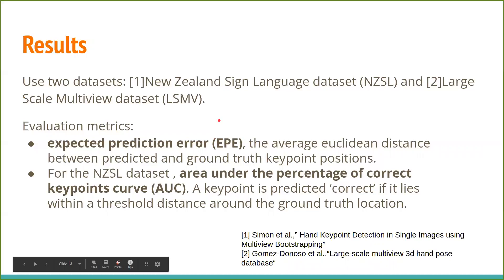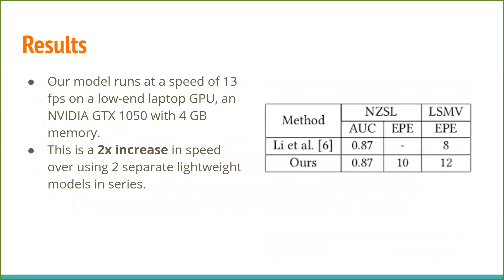For the results, we use two datasets: NZSL and LSMV. Our evaluation metrics are EPE — the average Euclidean distance between predicted and ground truth key point positions — and for the NZSL dataset, we also calculate area under the percentage of correct key points curve, where a key point is correct if it lies within a threshold distance around the ground truth location. Our model runs at 13 fps on a low-end laptop GPU, a 2x increase in speed over using two separate lightweight models in series, which gives around 6–7 fps on the same GPU. The accuracy is comparable with Lee et al.'s pose anchors method for both datasets.